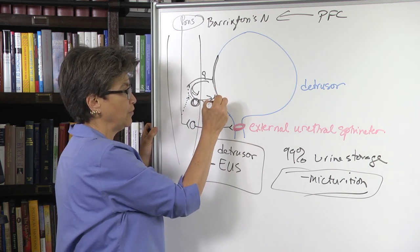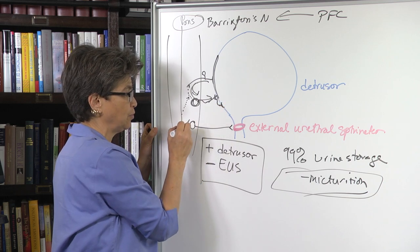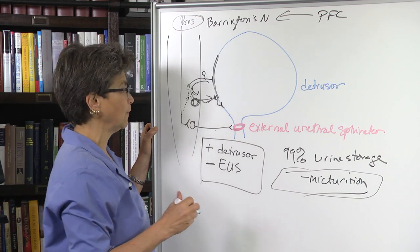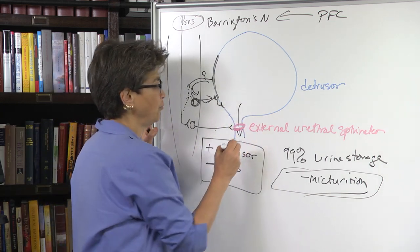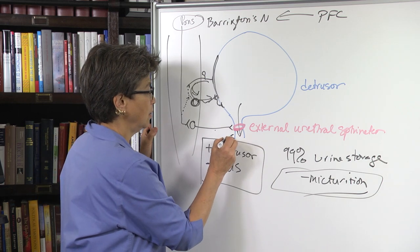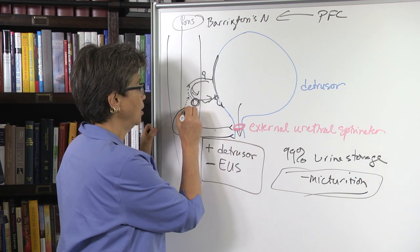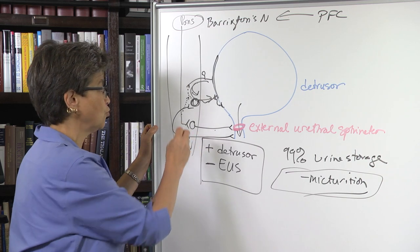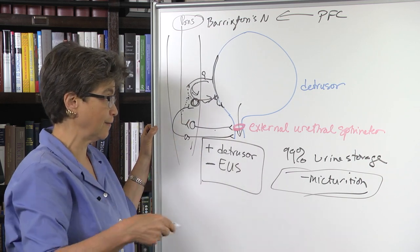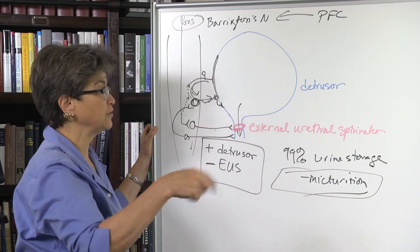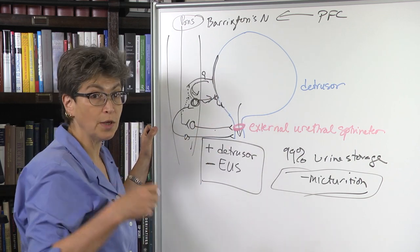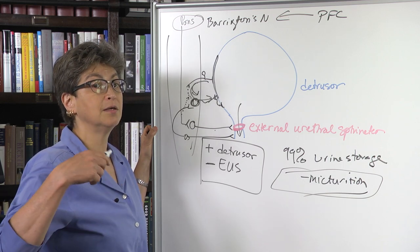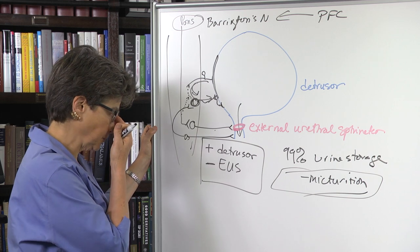And so you get this afferent-driven contraction of the detrusor coupled with the conscious relaxation of the external urethral sphincter. Once urine starts to flow through here, that information is going to increase the contraction, is going to facilitate further contraction of the detrusor. So once urine starts to pass, it will continue to pass. Okay. So that's how it normally works.